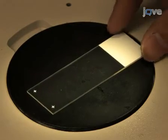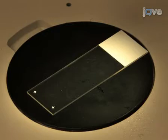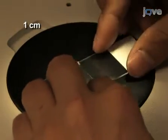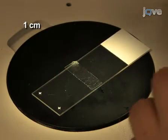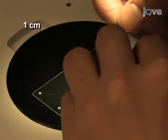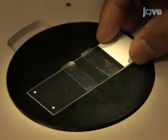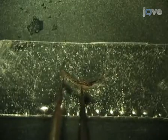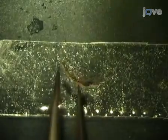Place two one-centimeter long pieces of double-sided tape parallel to each other and approximately one centimeter apart at the center and at the side of a glass slide. Under the dissecting microscope, use forceps to place one mosquito on its side on the central tape.